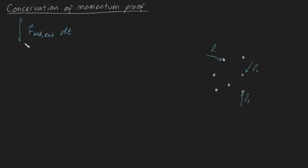with limits from one initial time T1 to some final time T2, is going to be equal to our total change in momentum. So it's going to be equal to our total momentum at some time T2, minus the total momentum at some time T1.